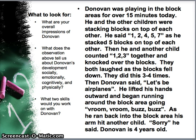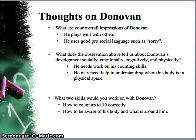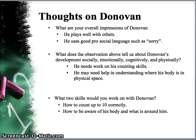This observation paints a very different picture of Donovan. In this one, he played very well with other children and was using good prosocial language, such as saying 'sorry' when he hit the child with his arm. Developmentally, this observation tells us he needs to work on his counting skills — he counted 'one, two, four, five, seven' when counting five blocks. He may also need help understanding where his body is in space, as he was running through the block area and knocked into another child.